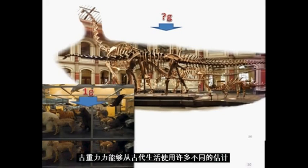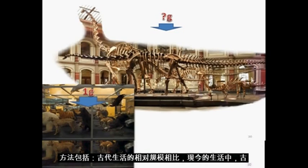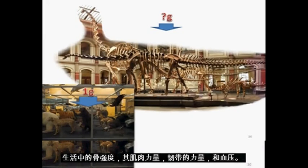The force of ancient gravity can be estimated from ancient life using a number of different methods, including the relative scale of ancient life compared to present-day life, ancient life's bone strength, its muscle strength, ligament strength, and its blood pressure.